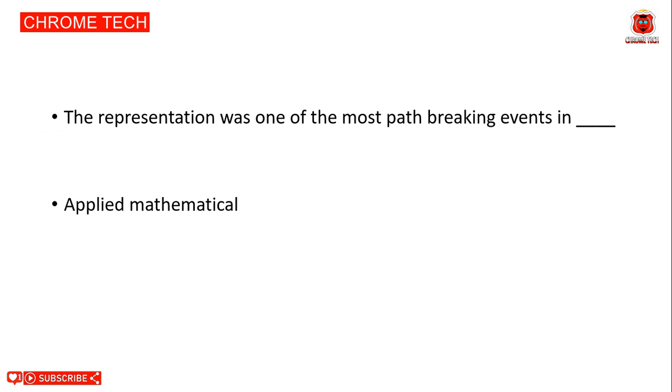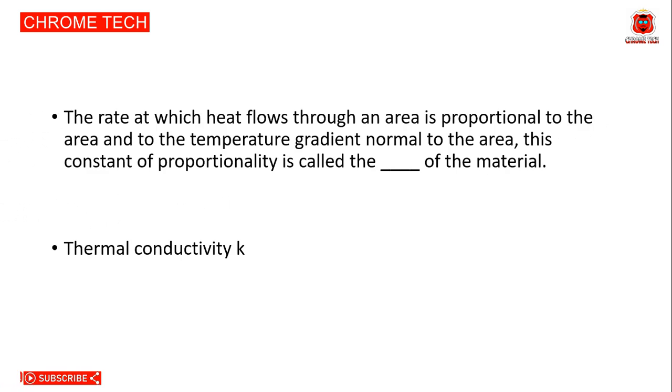The rate at which heat flows through an area is proportional to the area and to the temperature gradient normal to the area. This constant of proportionality is called what of the material? Thermal conductivity. Thermal conductivity k is the correct answer.